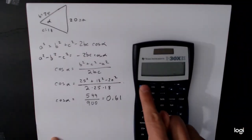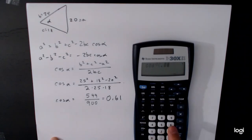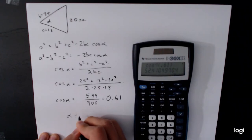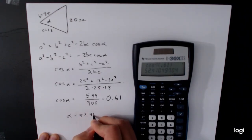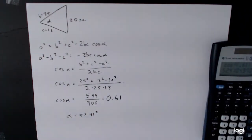So at this point we just need to take the inverse cosine, whoops, 0.61, and we get alpha is equal to 52.41 degrees. And again, that's all this problem is asking you to do. It only asks you to solve for alpha. You don't need to do any work to solve for the other two.